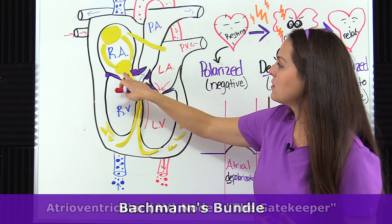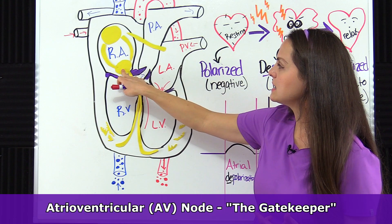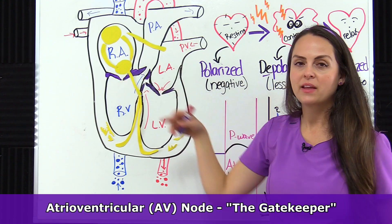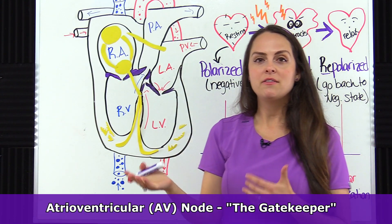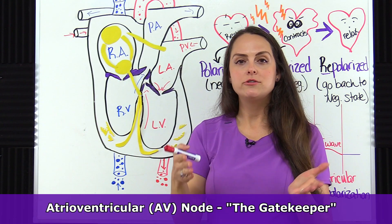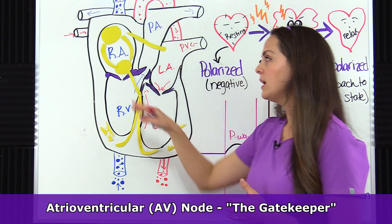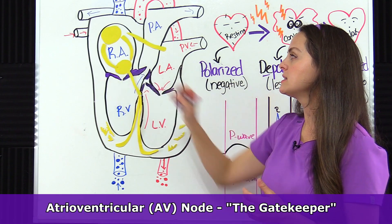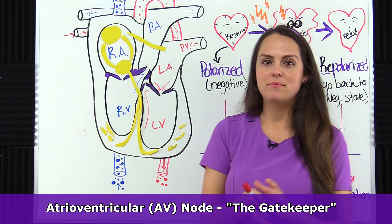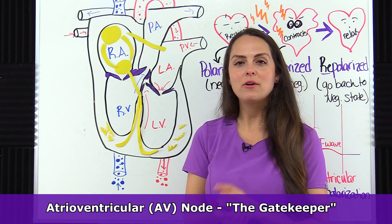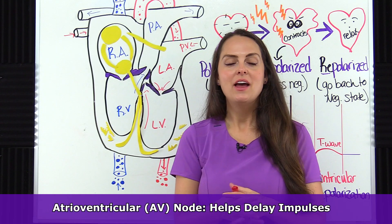Then it goes down and hits the AV node. AV node stands for atrioventricular node. We refer to this node as the gatekeeper.